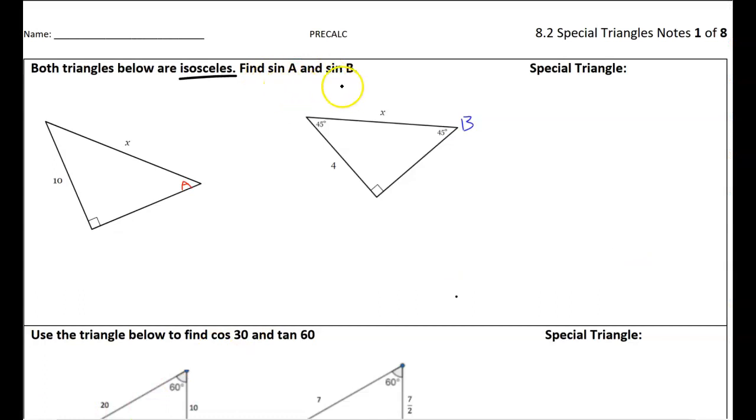So let's start with just the basics here. So we're going to have to find sin A and sin B, and we're told that these triangles are isosceles. And what that means is this side is also 10, and this side is also 4. So we have two sides that are the same. So notice I'm going to need, for sine of A, I'm going to need the opposite and the hypotenuse, so I have to figure out what X is.